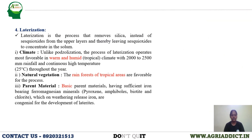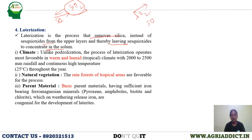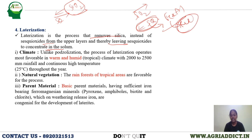Next is lateralization. In podzolization, sesquioxides move out and silica remains in the profile — so podzolization leaves silica-rich horizons. In lateralization, it is the opposite: silica is removed instead of sesquioxides, leaving sesquioxides to concentrate in the soil. Since sesquioxides are mostly iron and manganese oxides — like hematite — which are reddish in color, the lateralization process leaves the soil red in color.